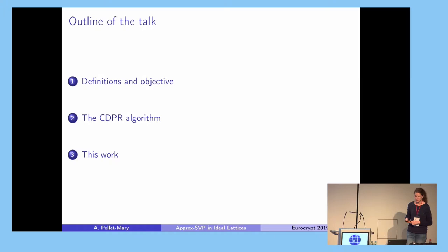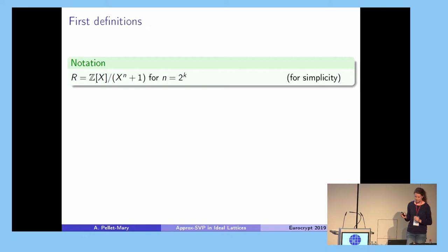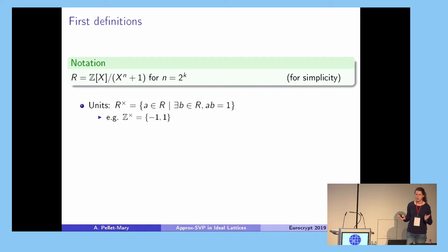For simplicity I'll restrict to the power-of-two cyclotomic ring Z[X]/(X^n + 1). I need two algebraic definitions. Units in the ring are elements that can be multiplied by another element so the product is one — in Z the units are just 1 and −1.